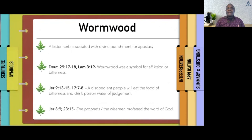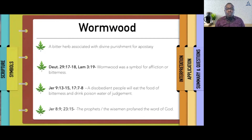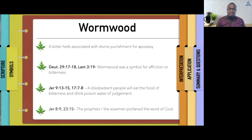Wormwood is a representation of a bitter herb associated with divine punishment, especially with apostasy. In Deuteronomy and Lamentations, Wormwood was a symbol for affliction or bitterness, especially for people who were God's people and had been disobedient. In Jeremiah 9, a disobedient people will eat the food of bitterness and drink poison water of judgment. In Jeremiah 8, the prophets or wise men had actually profaned the word of God. These symbols point to the punishment for apostasy.